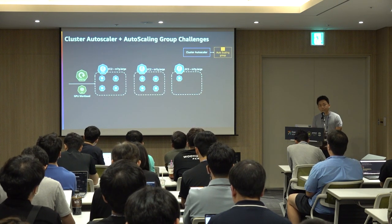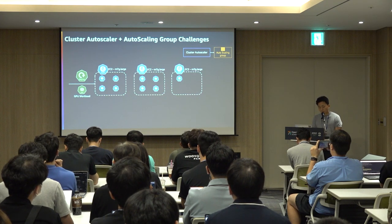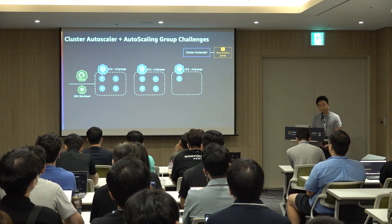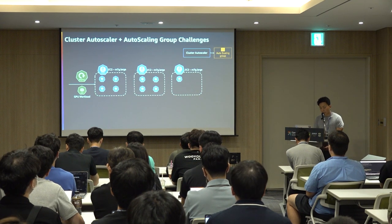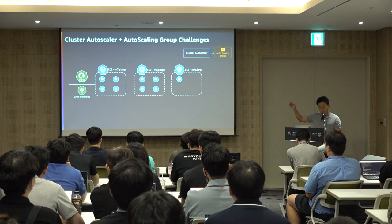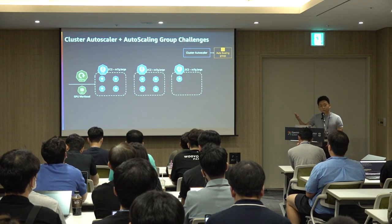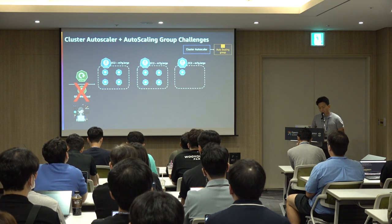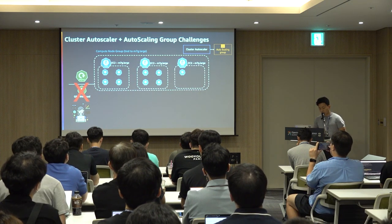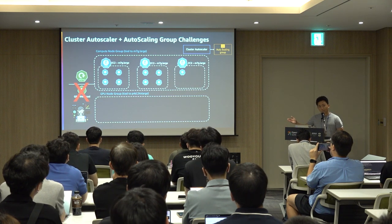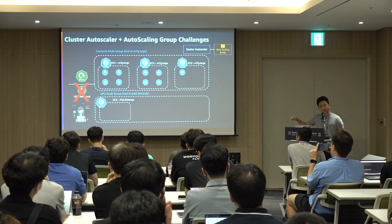However, Cluster Autoscaler comes with some challenges. An auto-scaling group is tied to one specific instance type and represents as a node group in Kubernetes. When you have new workloads requiring different resources — such as GPU workloads for inference or training — your existing auto-scaling group cannot host them, so you end up adding additional auto-scaling groups with different compute resources, like a P4 24XL instance.